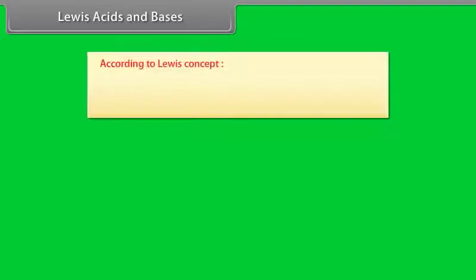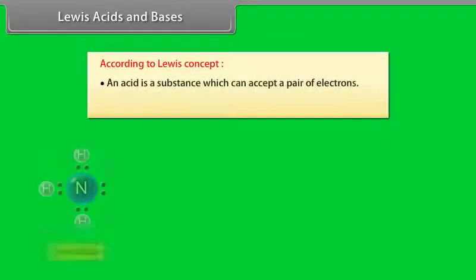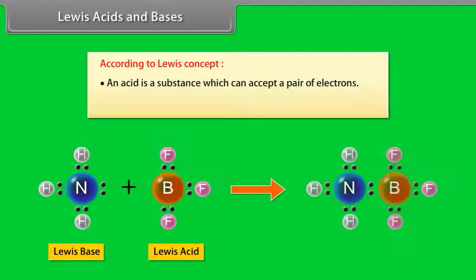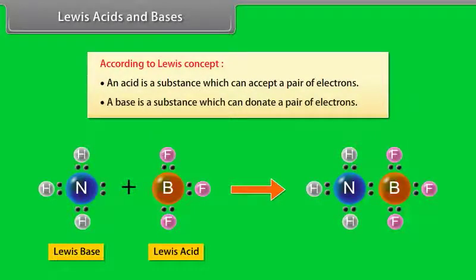Lewis acids and bases: According to the Lewis concept, an acid is a substance which can accept a pair of electrons, and a base is a substance which can donate a pair of electrons. For example, in the reaction, BF₃ acts as an acid.